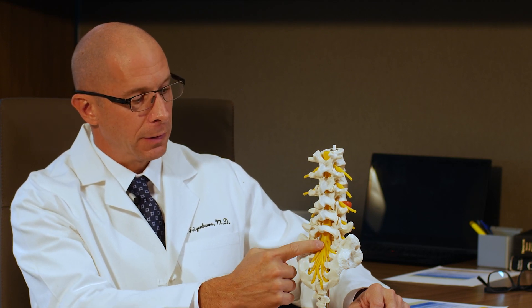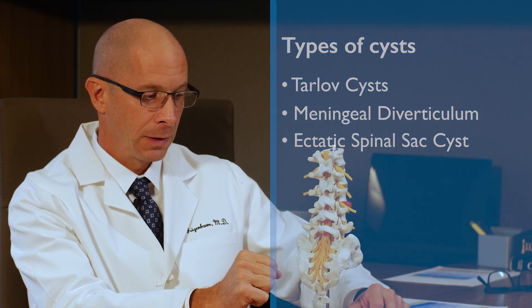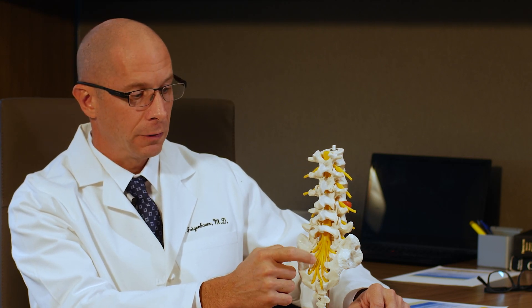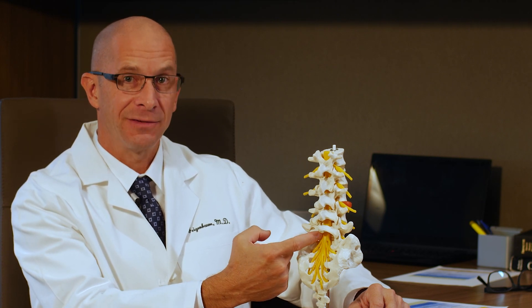The Intrasacral Meningeal or Meningeal Diverticulum takes up a bunch of space in the canal, just like Tarlov Cysts can, and can also press on the same nerves and cause similar symptoms. There's another type of cyst called an Ectatic Spinal Sac Cyst. Instead of a cyst that comes off of the Spinal Sac — which is the Intrasacral Meningeal — or a Tarlov Cyst, which arises from one of the nerve roots that come off the Spinal Sac.